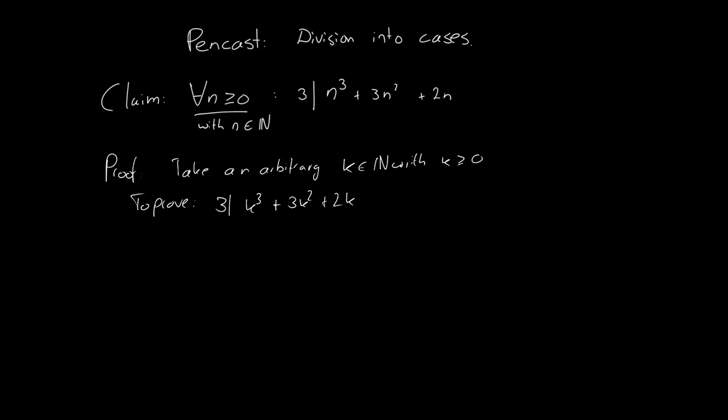Well, we're going to split k into three possible cases, three possible values if you will. We're going to divide it into these three cases, and these cases are based on the remainder that you could get if you were to divide k by 3.